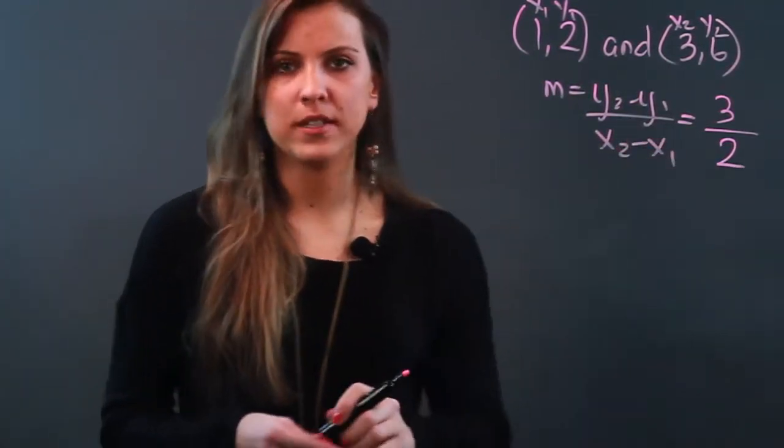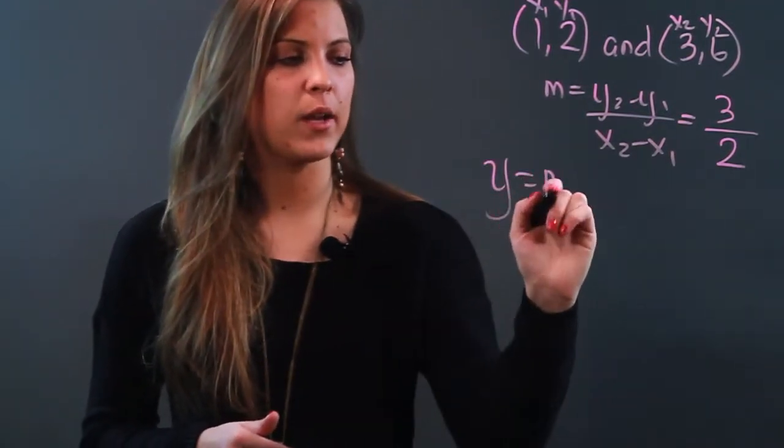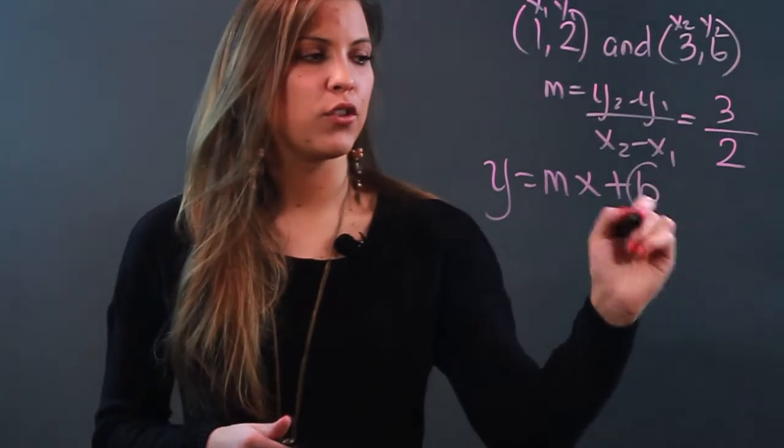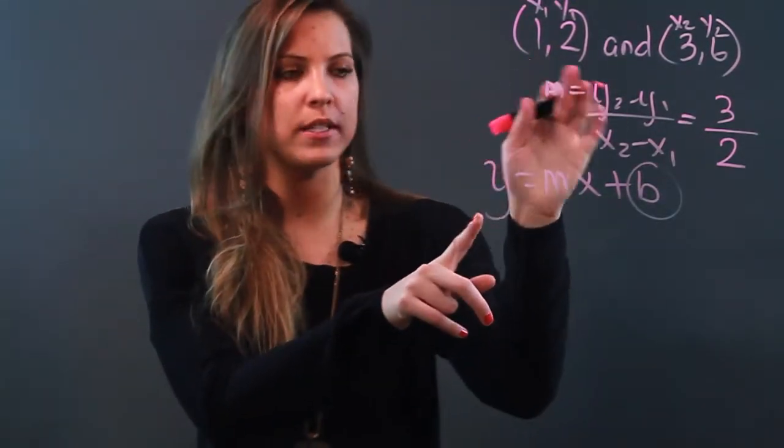So my slope is three halves. The reason I need to find that first is because in this formula y equals mx plus b, if you're looking for b you need the other three things. I've got two of them—I can pick whichever two points I want.